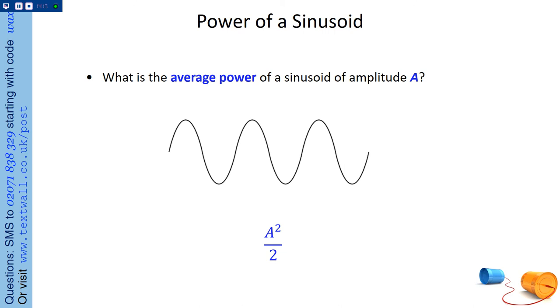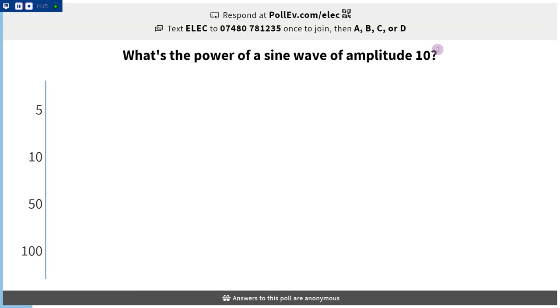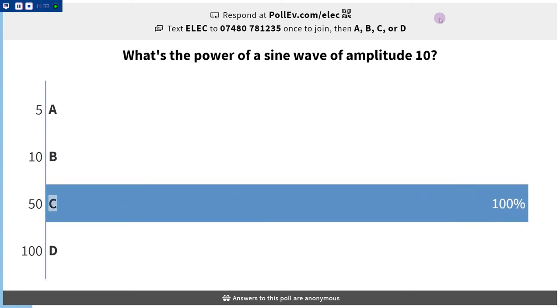We're going to use that. So, quick question for you. What's the power of a sine wave of amplitude 10? Is it working? So it's 10 squared divided by 2. 100 divided by 2, 50. That was easy.